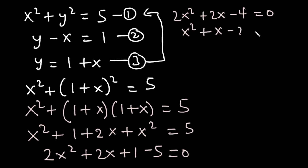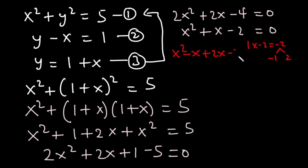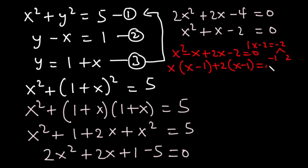The coefficient of the x squared term is one and the constant is negative two, so one times negative two equals negative two. The factors of negative two are negative one and two. We can expand to x squared minus x plus two x minus two equals zero. The GCF between x squared and negative x is x, giving x(x minus one) plus two(x minus one) equals zero, so (x plus two)(x minus one) equals zero. Therefore x is equal to negative two and x is equal to one.